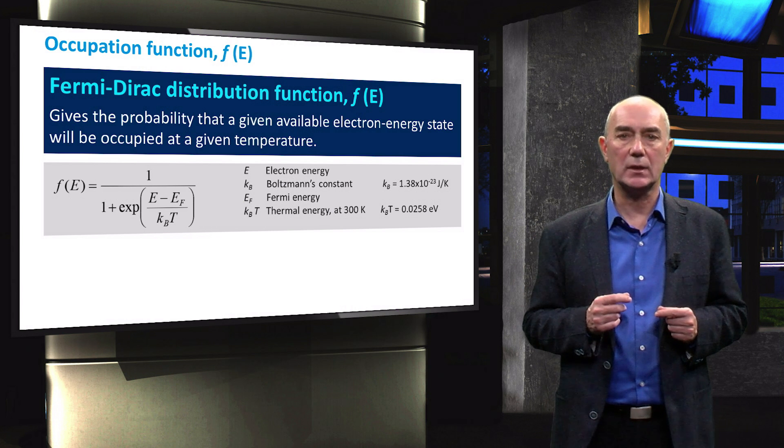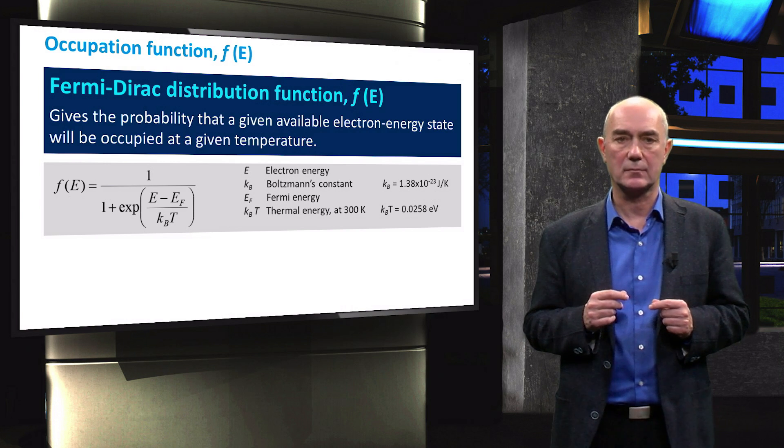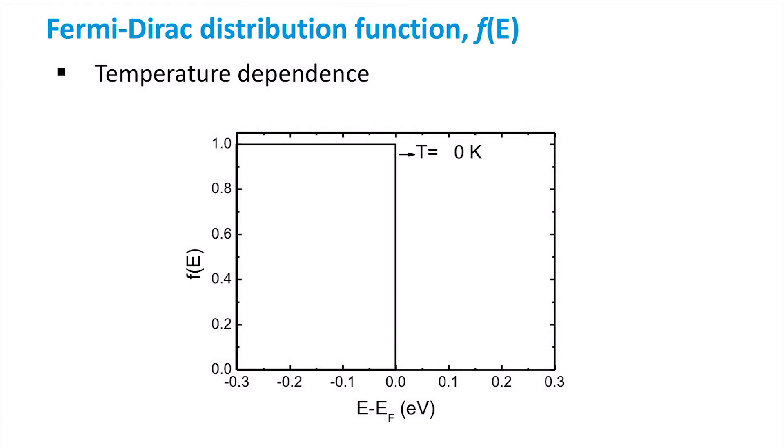But let's first take a look at the temperature dependence of this distribution function. At zero Kelvin, the Fermi-Dirac distribution function is a step function. It means only the energy levels below the Fermi level are occupied. Energy states of the conduction band that are above the Fermi level are empty. So no electrons occupy these states.